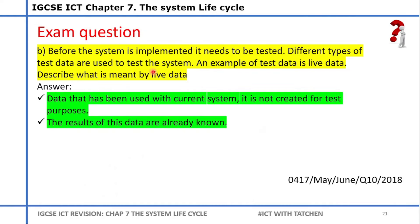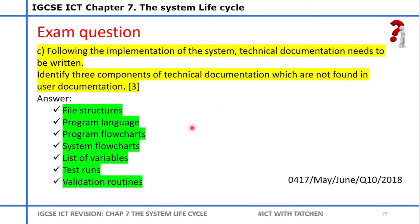Continuing the question: before the system is implemented it needs to be tested. Different types of test data are used — an example given is live data. Describe what is meant by live data. This is a two-mark question requiring two good points. Live data is data that has been used with the current system and is created for test purposes — you create it to test if a system works. The results of the live data are already known: for instance, testing a calculator with one plus one, you expect to see two — if you get three, that's abnormal.